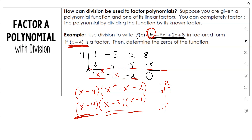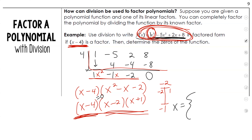So this is the linear factor they gave us in the beginning. I used synthetic division to find a quadratic, and then I just factored my quadratic. That is my cubic function factored so that everything is now linear. Now that I have all of my factors, we set each one equal to 0 and find the zeros. X minus 4 gives 4, x minus 2 gives 2, and x plus 1 gives negative 1. So those are my zeros.